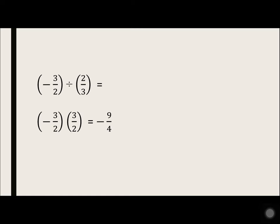A negative times a positive equals a negative. 3 times 3 on top is 9. On bottom, 2 times 2 is 4.